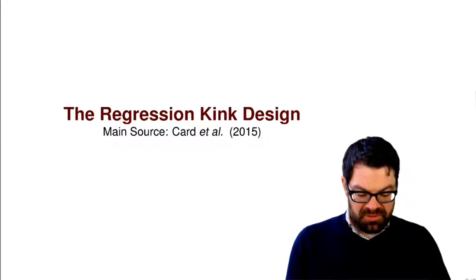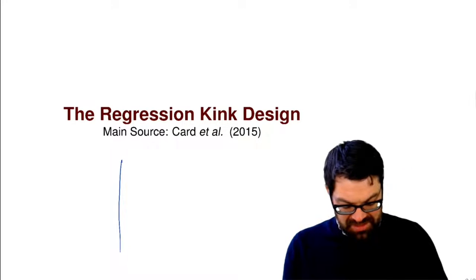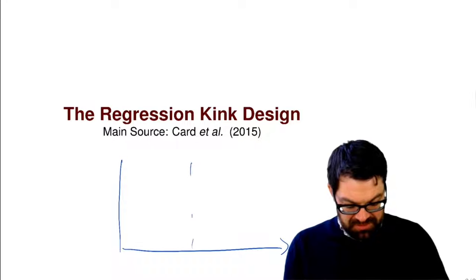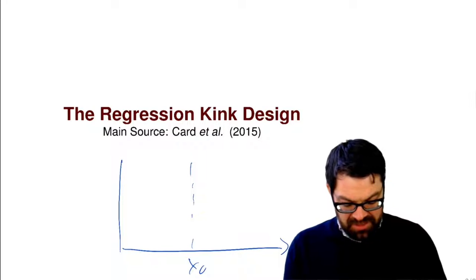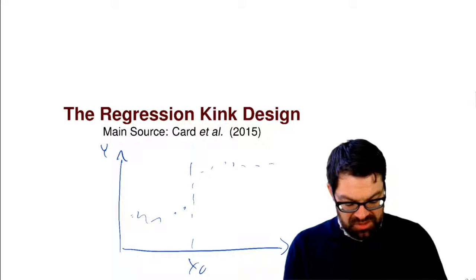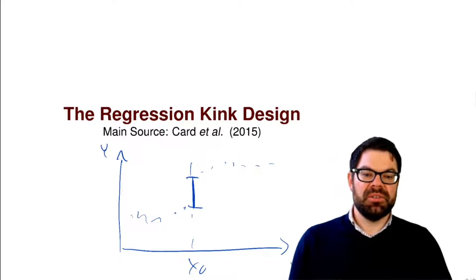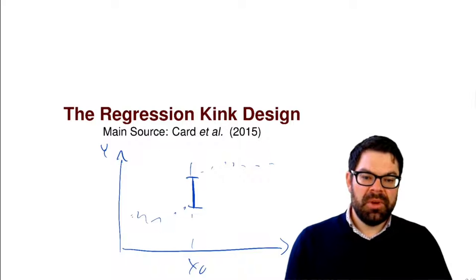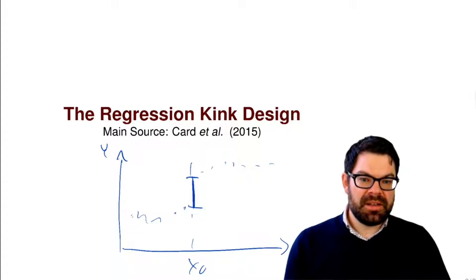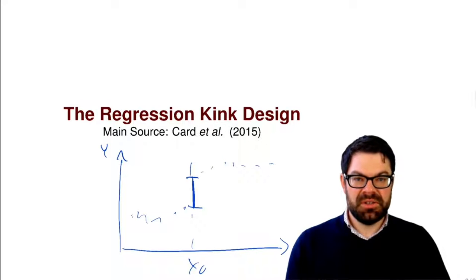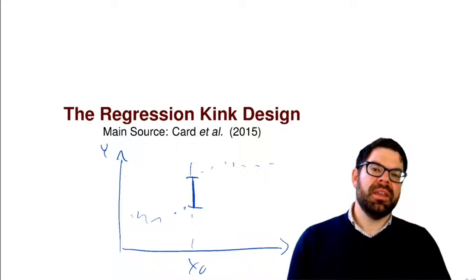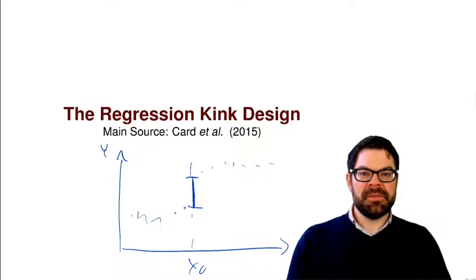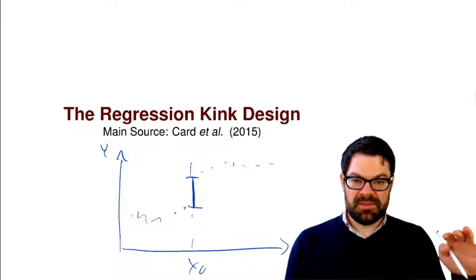In a regression discontinuity design, what we exploit is an actual discontinuity. We have a discontinuity in the running variable x and we then want to see whether the outcome changes discontinuously at that discontinuity. In a regression kink design, we do not have a discontinuous jump of the outcome, and also not a discontinuous jump of the treatment assignment.